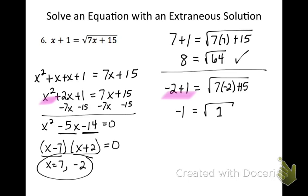So I cannot have negative 1 equaling the square root of 1. So since I have a square root equaling a negative number, I know that negative 2 is not my solution, and it's only x equals 7.